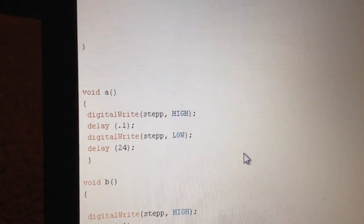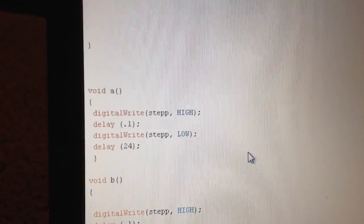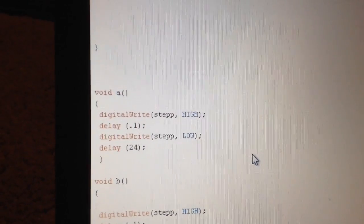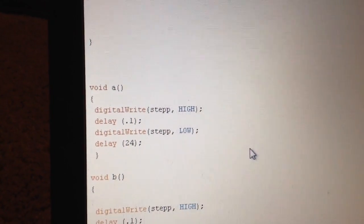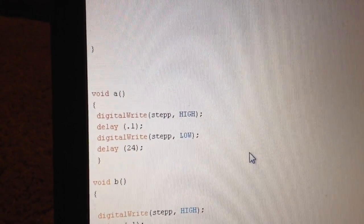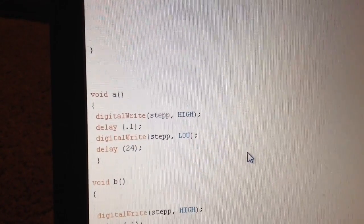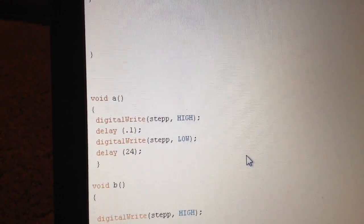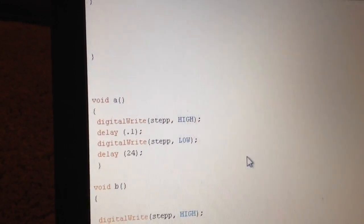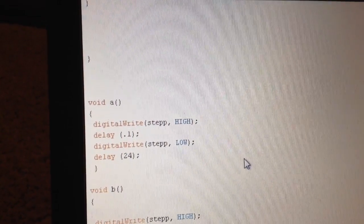Before I go into the void loop, I'm going to look at each letter. Starting with void A, what it does is it steps the stepper motor for 0.1 milliseconds, and then it stops the stepper motor for 24 milliseconds.